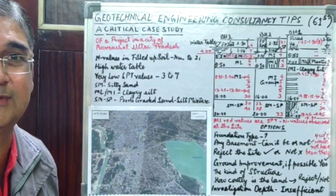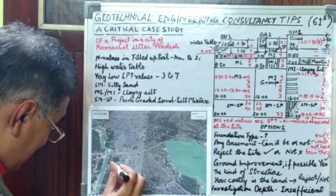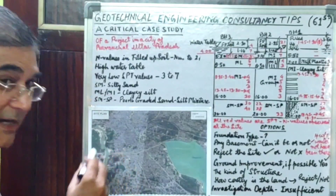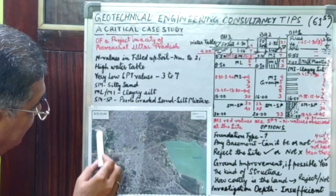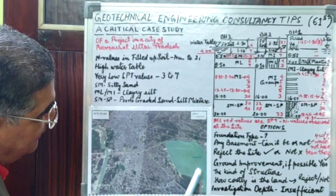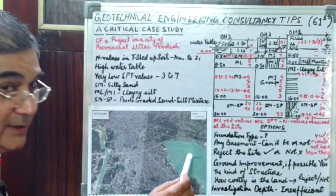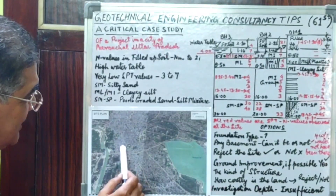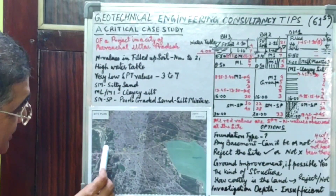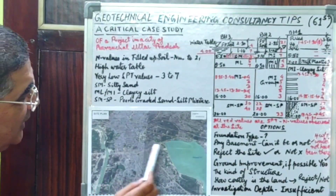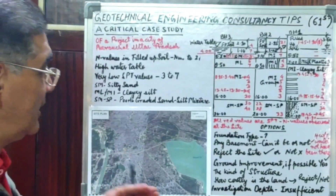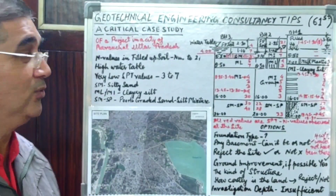This is the Google Map of the site. This yellow point is the site. You have a river flowing here and a very big water body nearby. The site was around one kilometer away from the river and around one and a half to two kilometers from this water body.